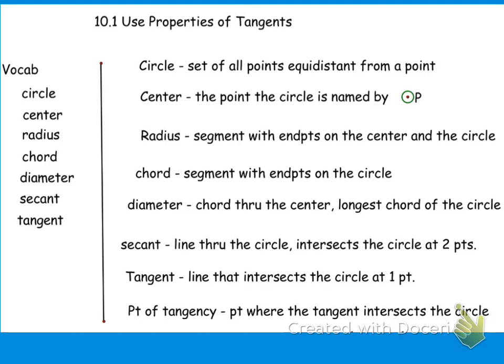A chord, here's where you're starting to get into some new stuff, is a segment also. So we've got two keywords here. We've got segment, two types of segments. This one was a segment here, and here we go with another segment with endpoints on the circle. Notice the difference. The radius is an endpoint on the center of the circle and the circle, and a chord, our endpoints are both on the circle. A diameter is a chord through the center. It's the longest chord of the circle. You guys know what a diameter is, but now this is kind of a different variation of that definition for you. It's a chord that goes through the center.